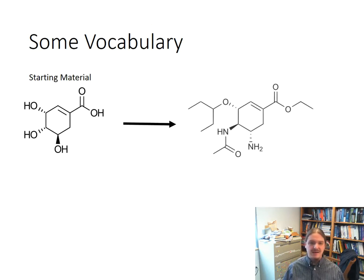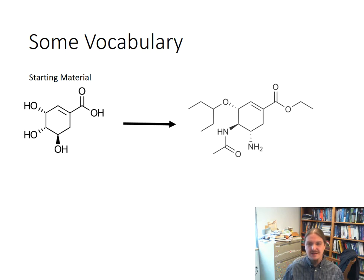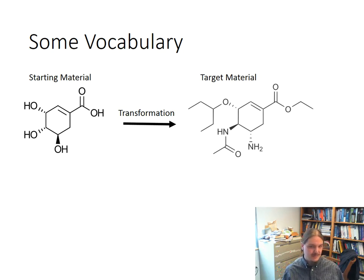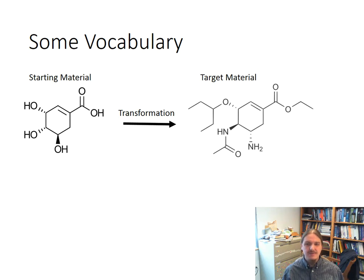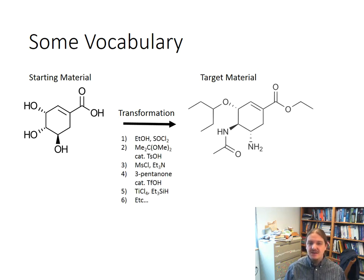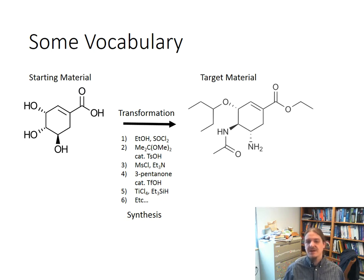In a given synthesis, the compound we start with is referred to as the starting compound or starting material. The thing we're trying to synthesize is the target material. The act of converting the starting material into the target material is called a transformation. I want to distinguish a transformation from a synthesis. A transformation represents the overall structural changes we desire to accomplish, whereas the synthesis is the actual sequence of individual reactions — and the intermediates formed in between — that lead us from the starting material to the target material.